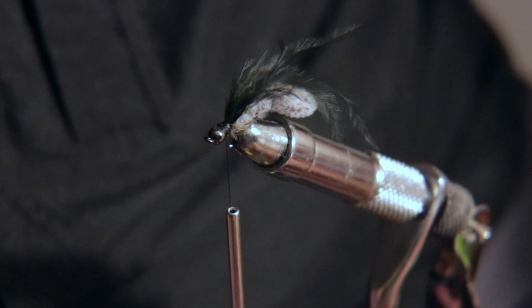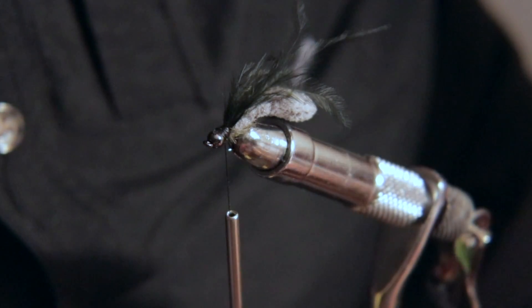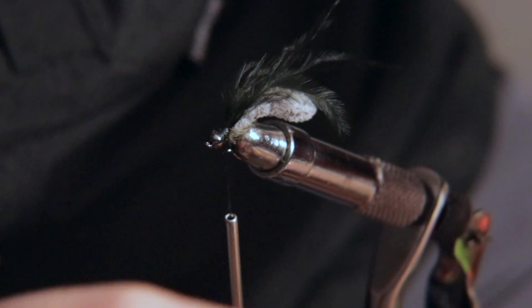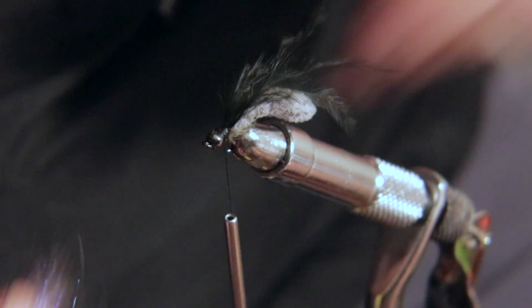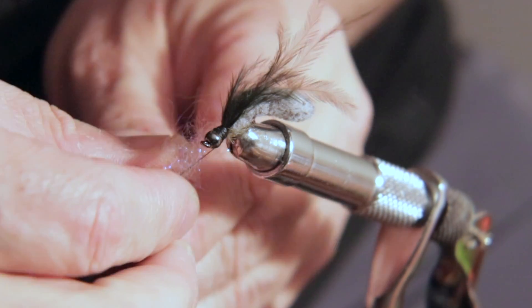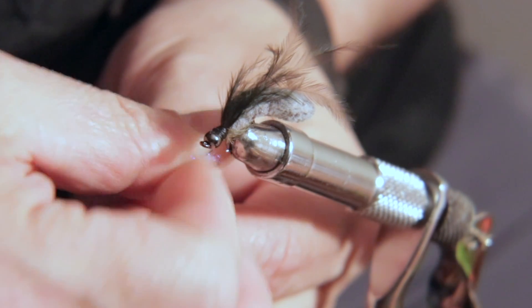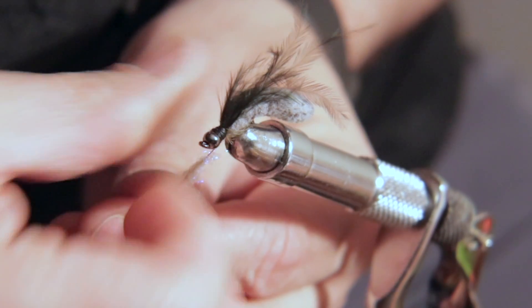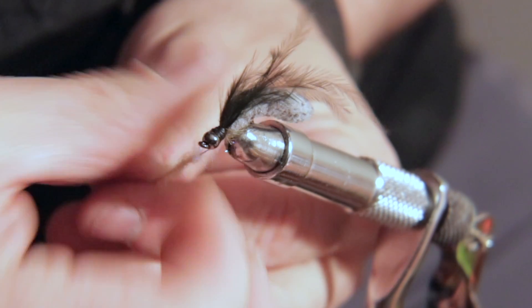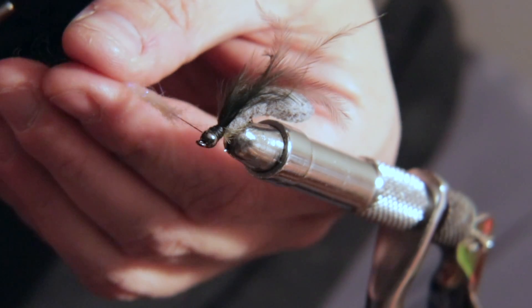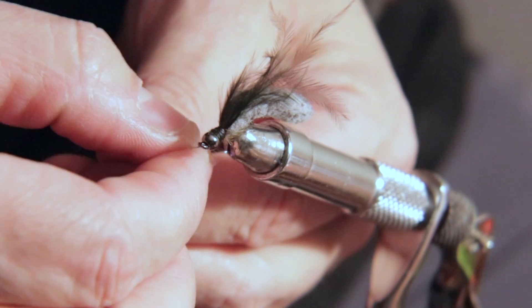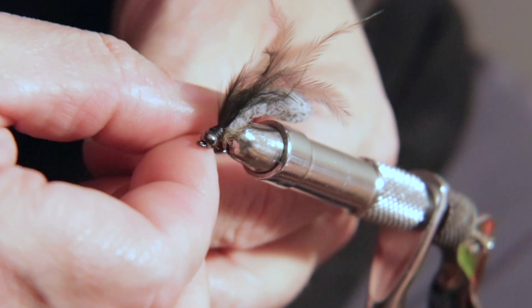Then sort of the final thing I do is I take a little bit of dubbing, not a whole lot. Normally, I've got some laying around on my bench. I don't use a lot. What it is, is I put it on here and it sort of makes a collar, makes a really nice collar for the fly itself.